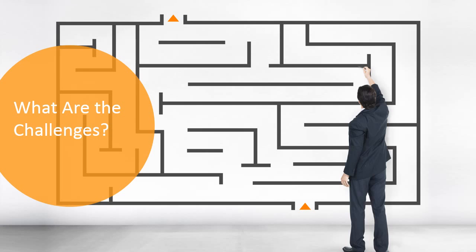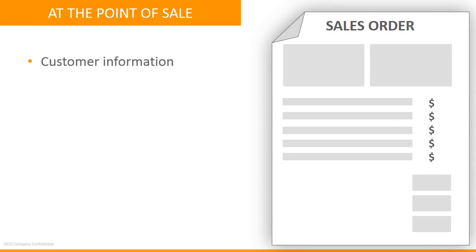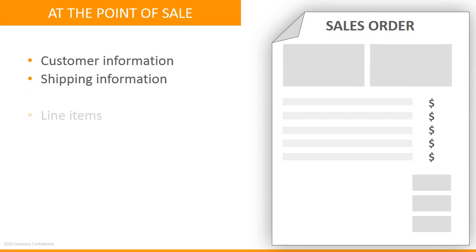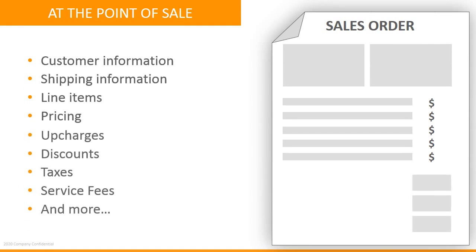Let's take a minute to look at some of the challenges of a typical order entry process. At the point of sale, your dealers, designers, retailers — all the people who are specifying your products on an order — they have a lot of information to put on that order: customer information, shipping information, line items, pricing, upcharges, discounts, taxes, service fees, and probably more.